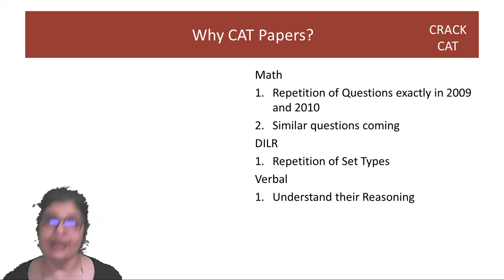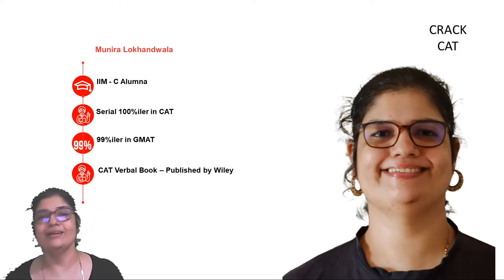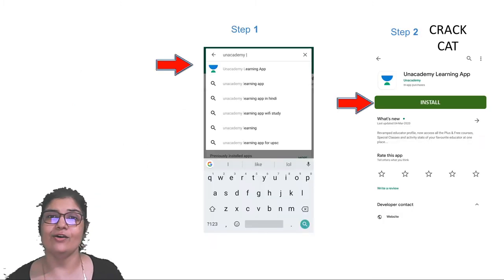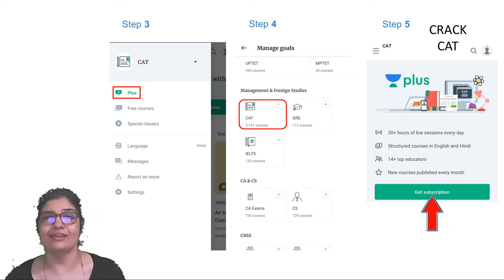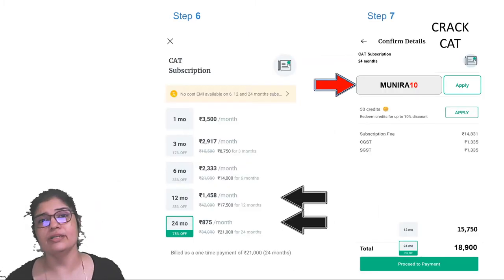So who am I? Hi, I'm Munira Lokhanwala, and I'm a Calcutta alumna, a serial 100 percentiler in CAT, a 99 percentiler in GMAT. I also have a CAT verbal book published by Wiley and available on Amazon. You can find me on Unacademy YouTube channels and also on the app for special classes. Just search for Unacademy in Play Store, install it, go for the plus CAT courses and get subscription. You can use the code Munira10 to get 10 percent discount.